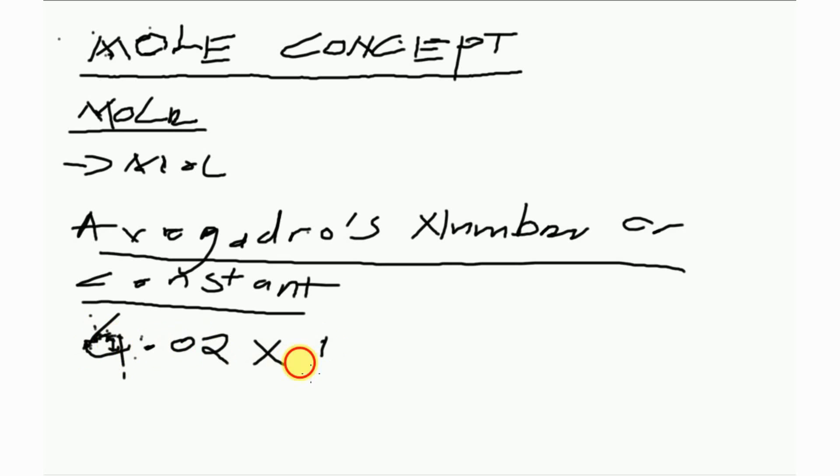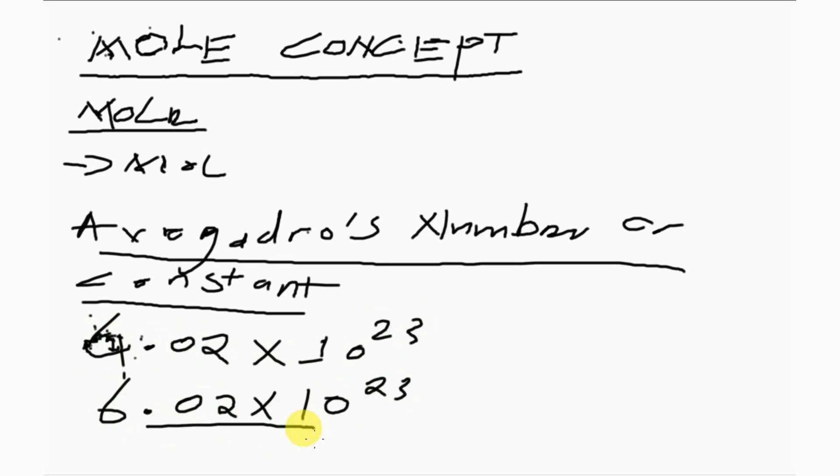This Avogadro's number was taken from an Italian scientist named Avogadro. We can say that one mole of any element contains 6.02 times 10 to the power 23 particles. That's the Avogadro's number.